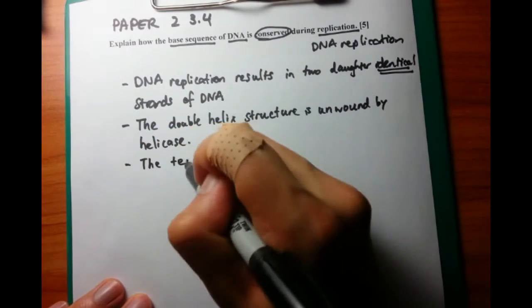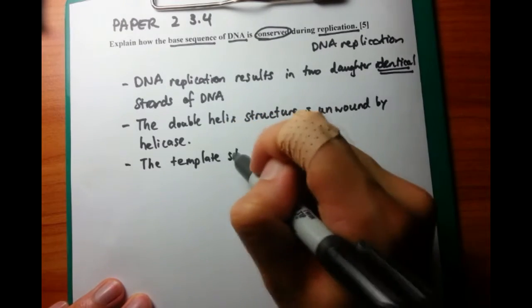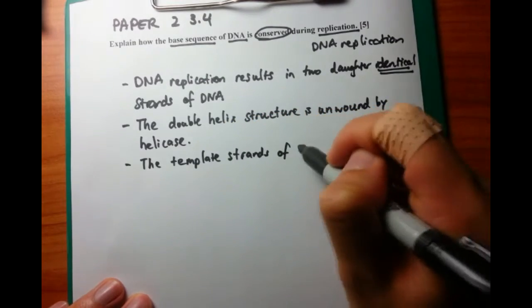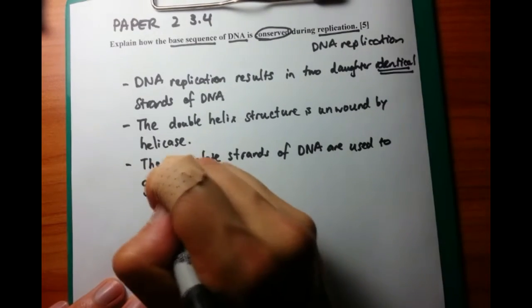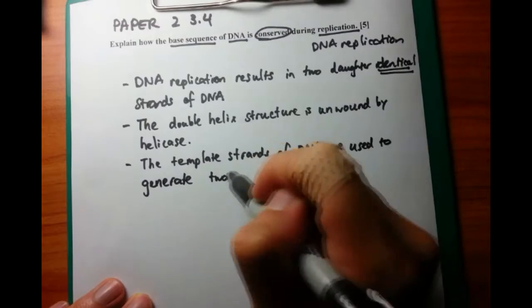So the second thing that happens is that after the helix has been unwound, then the template strands of DNA are used to generate two new molecules of DNA. And this is a semi-conservative process.